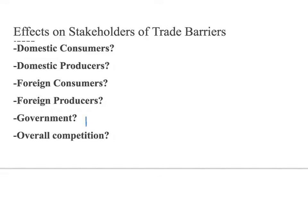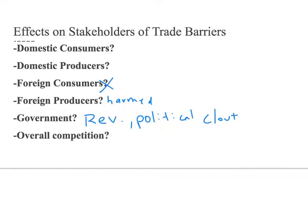For the government, trade barriers generate revenue and political clout, as they help domestic producers who can vote for the government. Foreign competitors and producers are harmed — their products are less likely to sell due to higher prices or lower quantities allowed in the domestic market. If we assume no retaliatory tariff or quota, foreign consumers remain relatively unaffected. But if retaliation occurs, foreign consumers would also be affected.